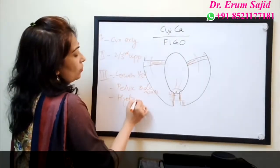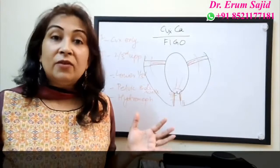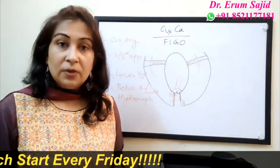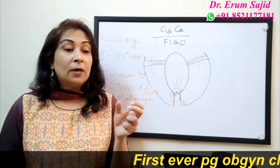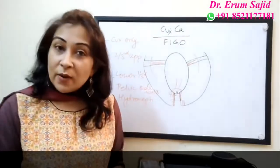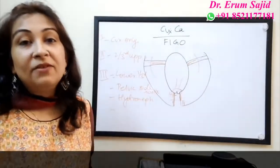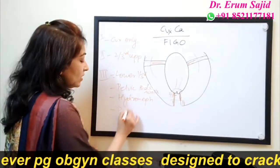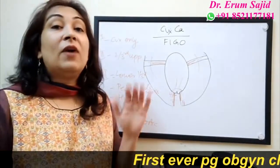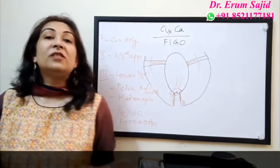Why does stage three include hydronephrosis or non-functioning kidney? Because by the time the tumor has involved the parametrium and reached the pelvic sidewall, the ureter will not be spared. Once the ureter comes into the tumor's path, it gets compressed by pressure or necrosis, leading to back-flow and hydronephrosis. So stage three includes hydronephrosis. Also, pelvic and para-aortic lymph nodes come into stage three. Note: I have not yet covered 1A1, 1A2, 1B1 — I'm first building the conceptual framework.